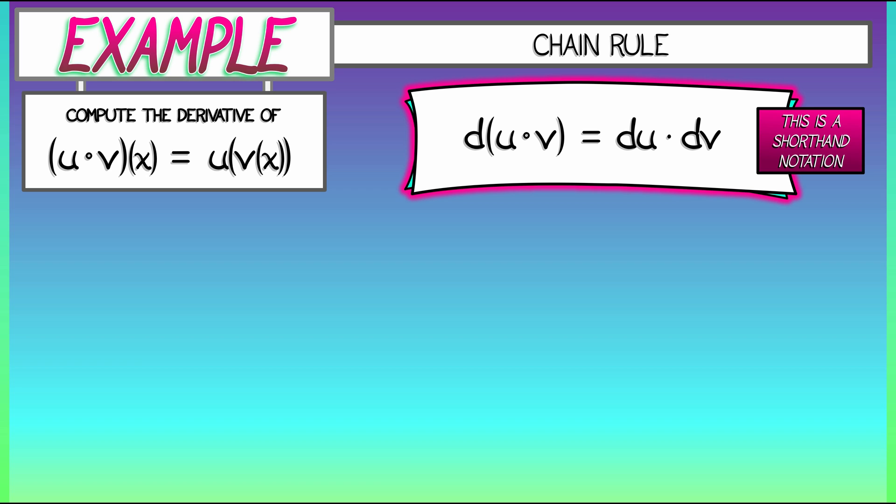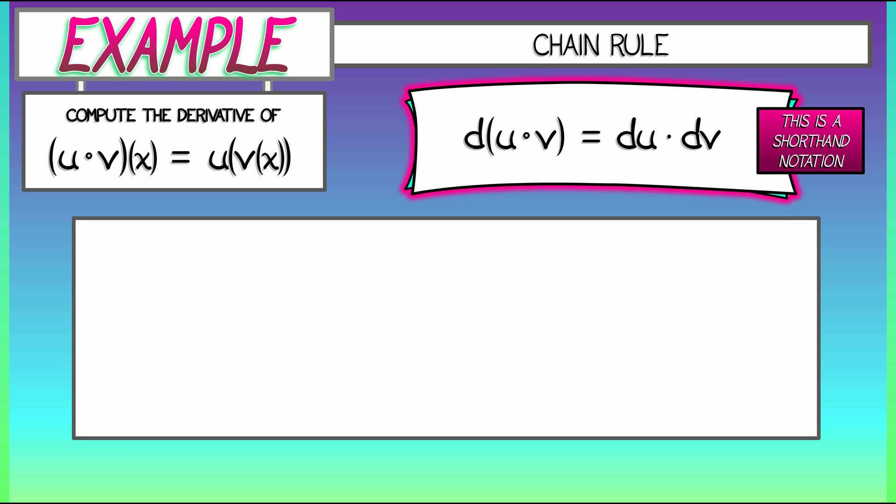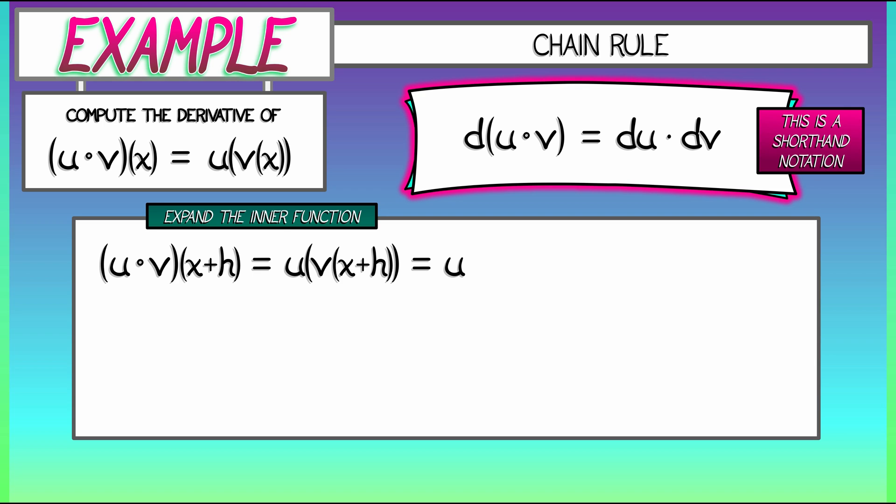Our process is same as it ever was. We're going to take u composed with v and evaluate it at x plus h, where h is some small perturbation to the input of this function. This is, of course, u of v of x plus h. And we're going to start off by expanding that inner function v as per usual. So this expands out to u of v of x plus dv/dx times h plus big O of h squared.